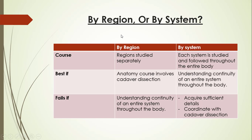What are the benefits of regional versus systematic anatomy? Regional anatomy works best if the anatomy course involves cadaver dissection, but falls short when understanding the continuity of an entire system throughout the body is needed. Systematic anatomy works best if your syllabus requires you to understand the continuity of an entire system throughout the body, but falls short if you need sufficient detail or if the syllabus requires coordination with cadaver dissection.